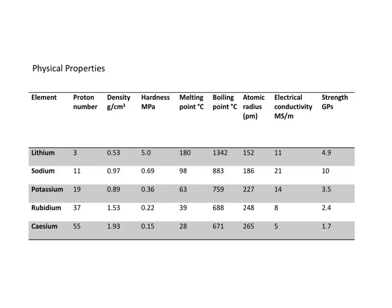Let's look specifically at some physical properties. These give some examples of them. We have density, hardness - which is how easy it is to scratch - the melting and boiling points, the atomic radius - the size of an atom - the electrical conductivity - how easily it conducts electricity - and its strength. We can see, not in every case, but we can see trends in these properties.